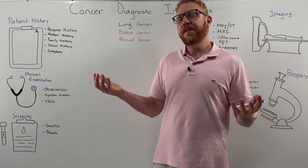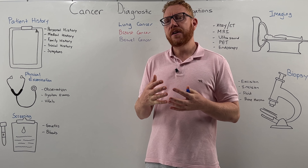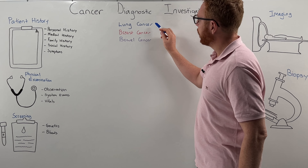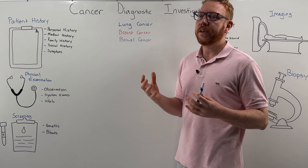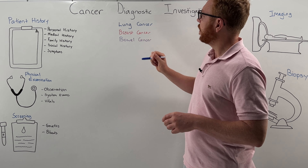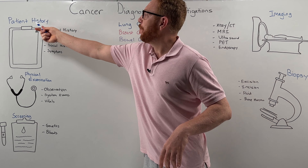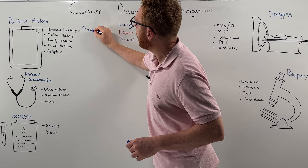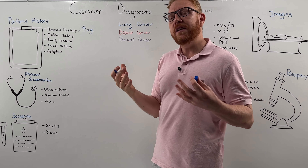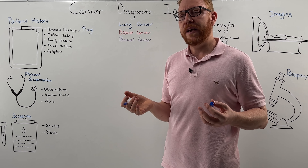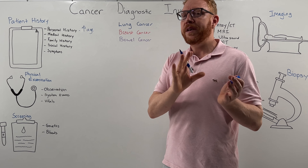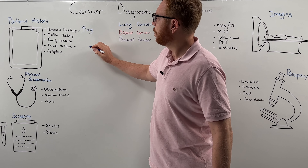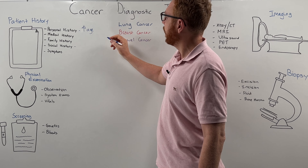That covers the generic diagnostic approaches for cancer. Now let's focus on specific common types, starting with lung cancer. In terms of patient history, increasing age is a large risk factor — 75% of lung cancer diagnoses are in individuals over 65. By far the largest risk factor in social history is smoking, both first-hand and second-hand.